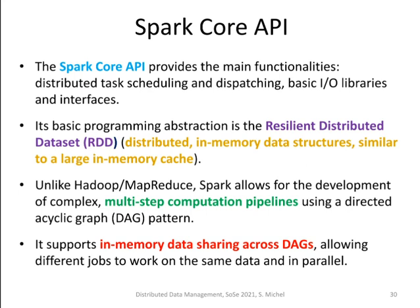The Spark Core API is the basic functionality you can make use of. In particular, it allows you — similarly but more powerfully compared to Hadoop MapReduce — to specify how data is distributed over nodes and what computation you want to perform. The programming abstraction in Spark is around resilient distributed data sets, which are distributed in-memory data structures similar to a memory cache. You create these resilient, immutable distributed data sets, and by performing operations on them, you can transform data sets into new data sets.